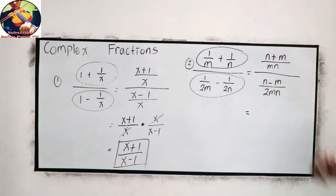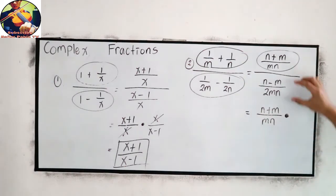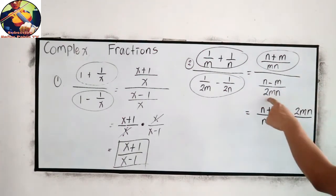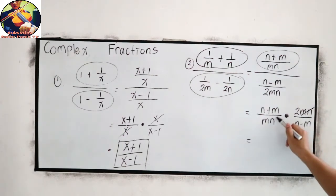Now copy our numerator, N plus M all over MN. Then proceed to multiplication. Get the reciprocal of our denominator, 2MN over N minus M. We can cancel MN and MN. How about N plus M over N minus M? We cannot cancel them because they are different. So our final